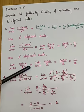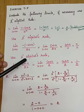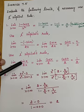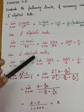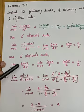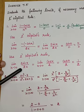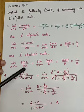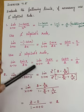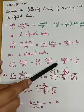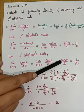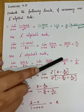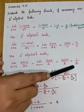Apply L'Hôpital's rule again: differentiate the numerator sin x to get cos x, and differentiate the denominator 2x to get 2. Now apply the limit: cos(0)/2 = 1/2. The answer is 1/2.